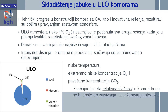Intenzitet disanja i promene u plodovima snižavaju se kombinovanim delovanjem niske temperature, ekstremno niske koncentracije kiseonika i povećane koncentracije ugljen-dioksida. Značajno je i da relativna vlažnost u komori bude što viša, da ne bi došlo do isušivanja i smežuravanja plodova.